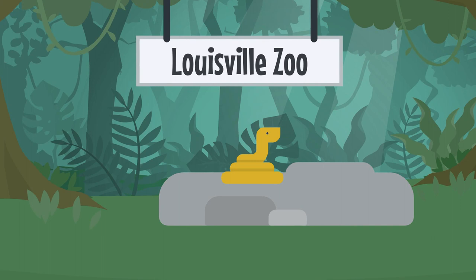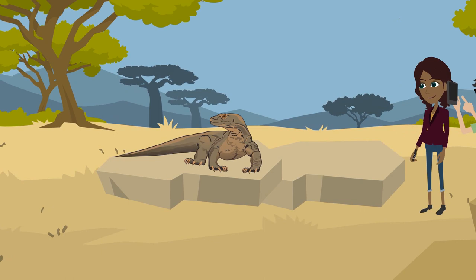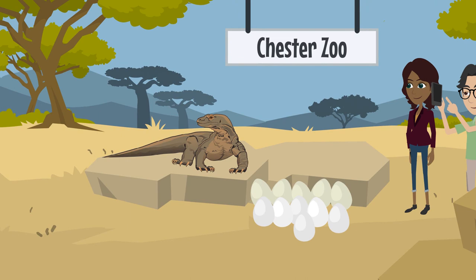There have been a few famous cases of Parthenogenesis over the years. At Louisville Zoo, Kentucky, a reticulated python named Thelma, who had never been bred with, produced six eggs that grew up to be healthy young snakes. In 2006, Flora the Komodo dragon made headlines around the world when she produced 11 parthenogenic eggs. She had been at Chester Zoo since 1999 and had never been near a male. A paternity test later proved she was genetically both mother and father to the offspring.